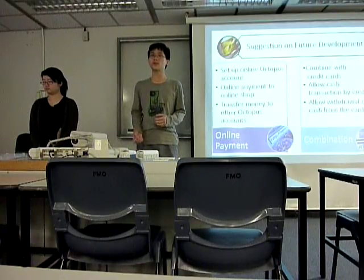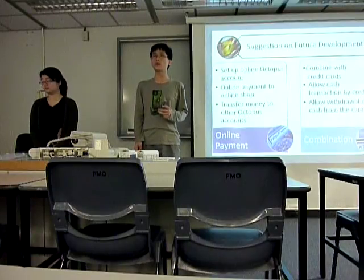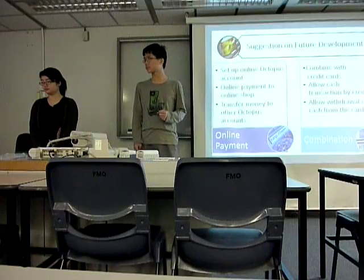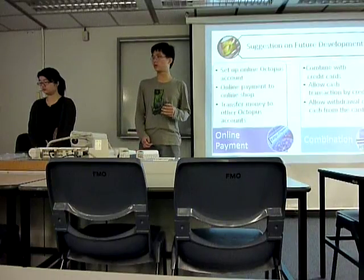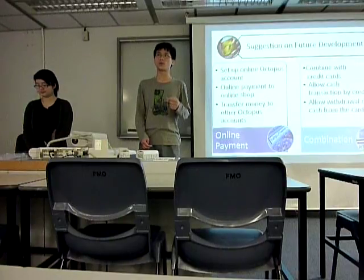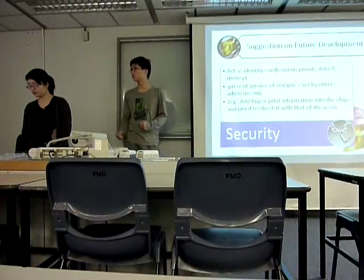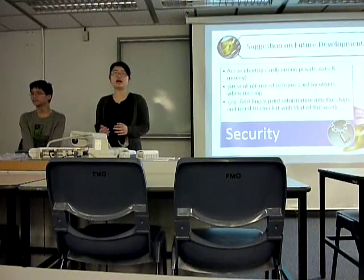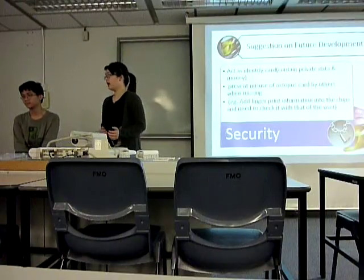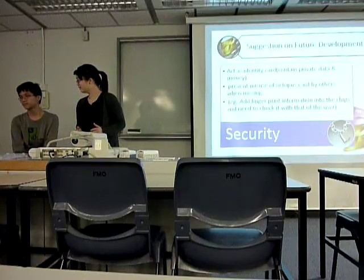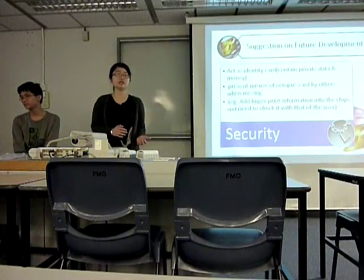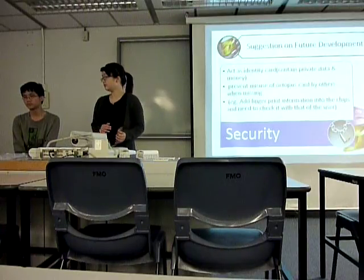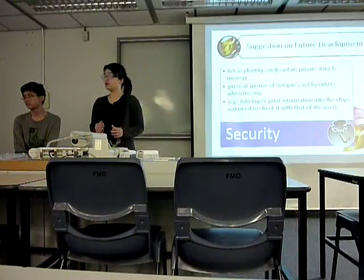Also, we can have some combination with other kinds of electronic money systems. For example, when combined with credit cards, it can allow cash transactions by credit and then clear the credit monthly. Also, it would allow withdrawal of money from the Octopus card, similar to what we do at an ATM. Besides, we think we can also add some personal information to the Octopus card, but before this, we should have a higher security level. We may add fingerprint information into the card, so we can verify the fingerprint when extracting important information, preventing misuse of the Octopus card if it is lost.